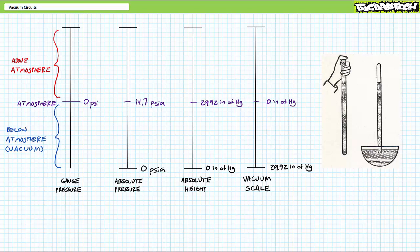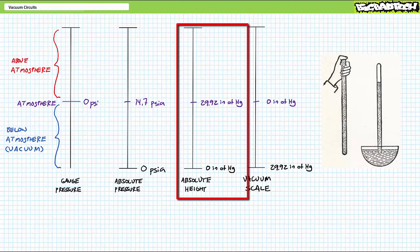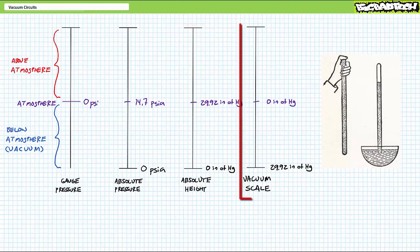If you think about it, we're dealing with four linear scales. Gauge pressure that starts at atmospheric conditions and goes up as pressure goes up. Absolute pressure that starts at vacuum conditions, which also goes up as pressure goes up. Absolute height that also starts at vacuum conditions, which also goes up as pressure goes up. And finally, the vacuum scale, which starts at atmospheric conditions, however, goes up as pressure goes down.